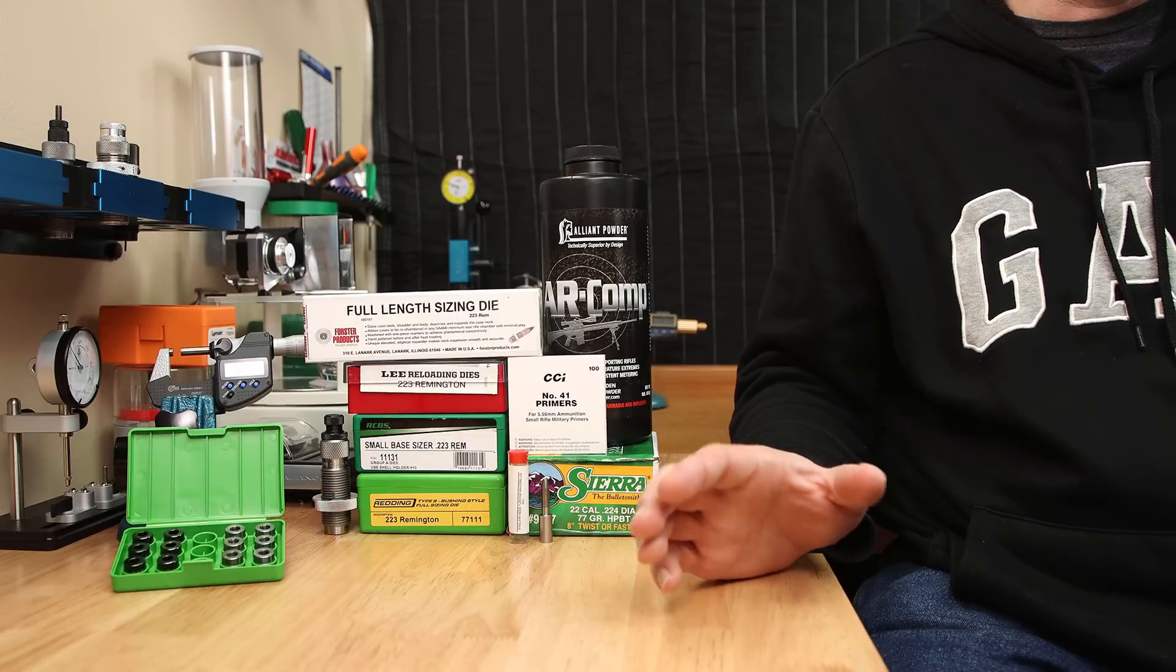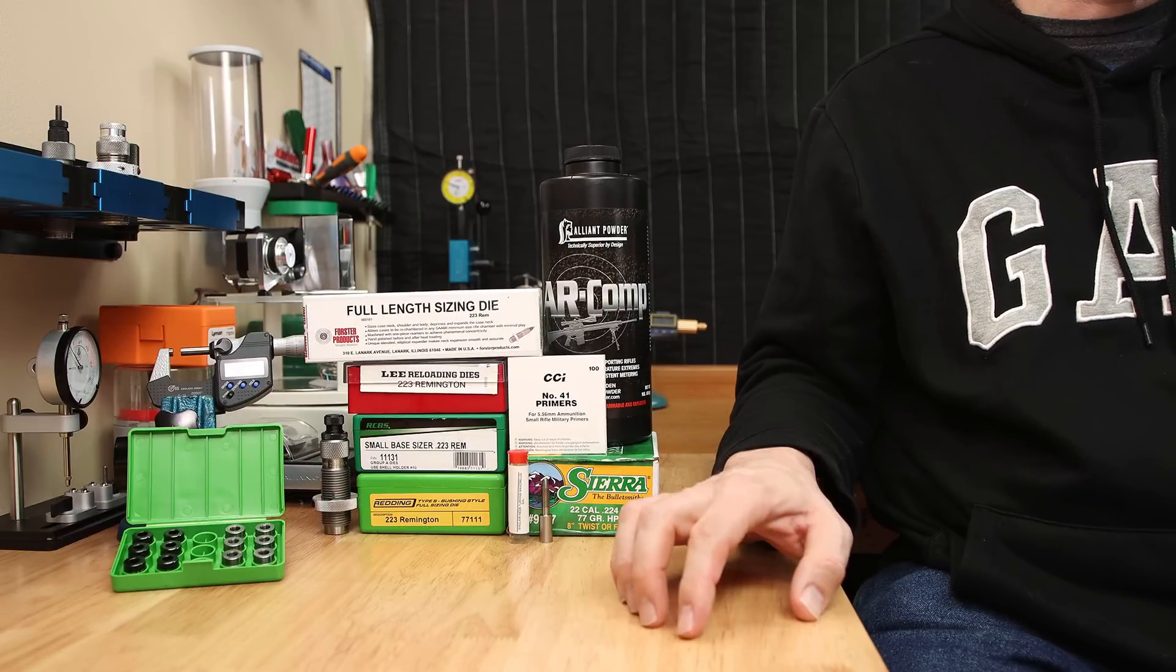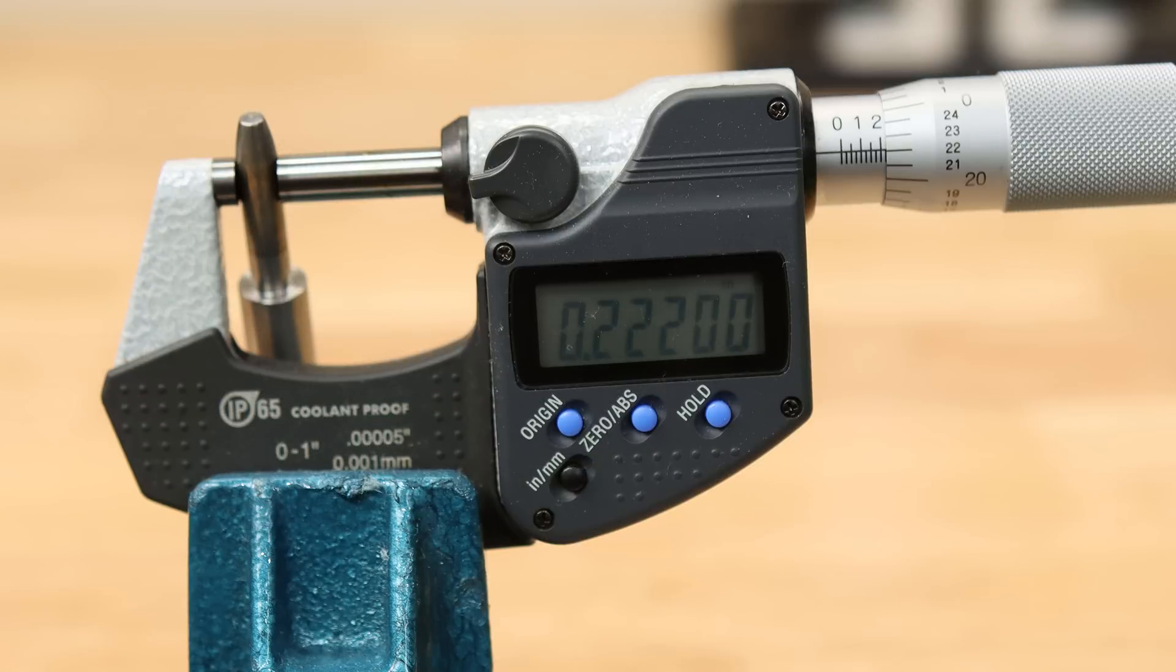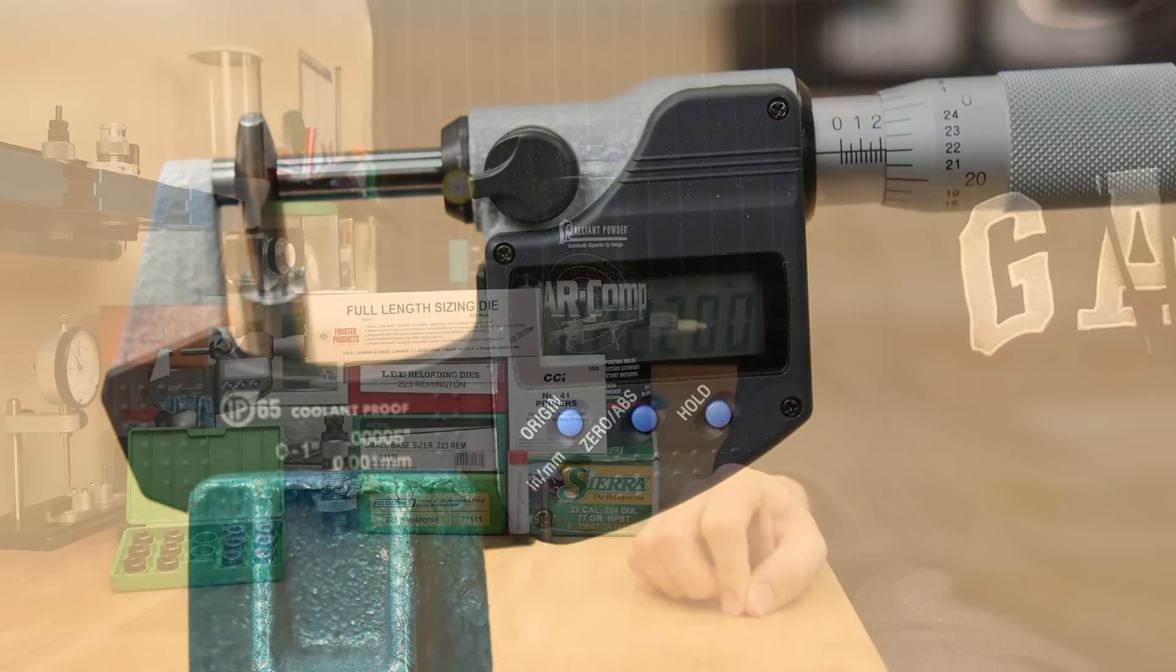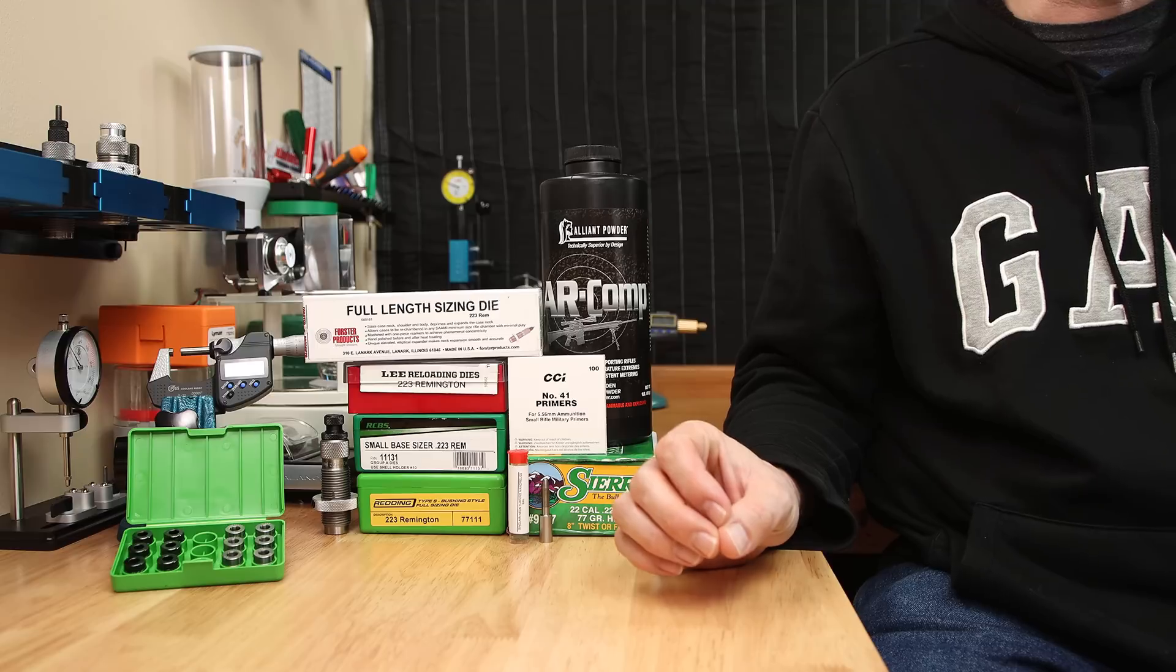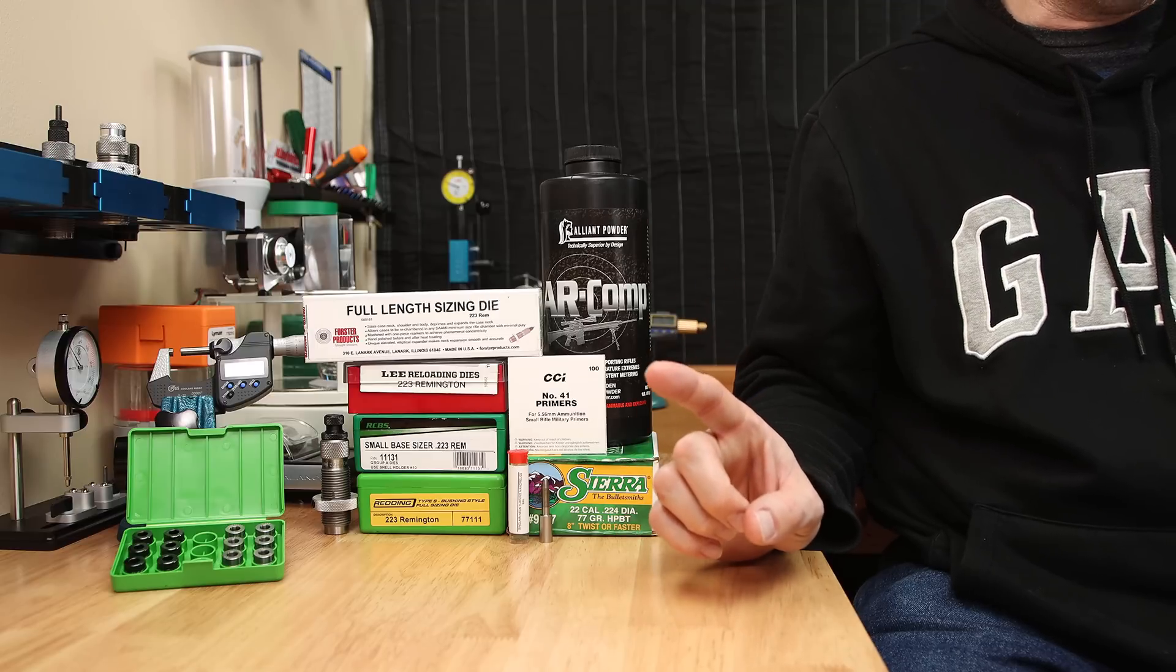This is really a situation where I appreciate having the micrometer, because I don't think we'd be able to see it if we were just measuring it with calipers. Now our expander mandrel is the exact .222 inches that we thought it was, but would we have seen better results if we'd used a slightly larger expander mandrel. Certainly something I think that needs tested.